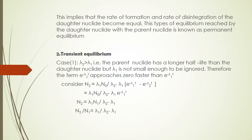Next, transient equilibrium. Here we consider two cases: where λ₂ > λ₁ and where λ₂ < λ₁. In the first case where λ₂ > λ₁, the parent nuclei has a longer half-life than the daughter nuclei, but λ₁ is not small enough to be ignored. Therefore, the term e^(−λ₂t) approaches 0 faster than e^(−λ₁t). We apply the successive disintegration equation: N₂ = λ₁N₀ / (λ₂ − λ₁) × [e^(−λ₁t) − e^(−λ₂t)].